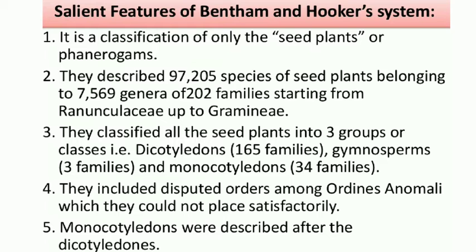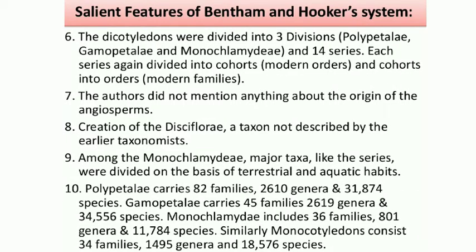That was a little wrong. Sixth point: Dicotyledons were divided into three divisions — Polypetalae, Gamopetalae, and Monochlamydae — and 14 series. Each series was further divided into cohorts (orders), and orders contain families. Seventh: the authors did not mention anything about the origin of the angiosperms — from which plant groups angiosperms had originated.